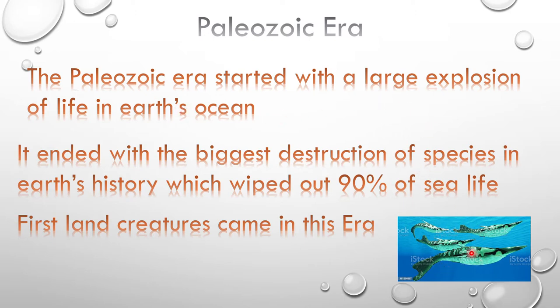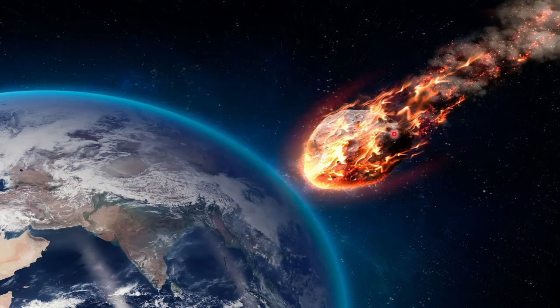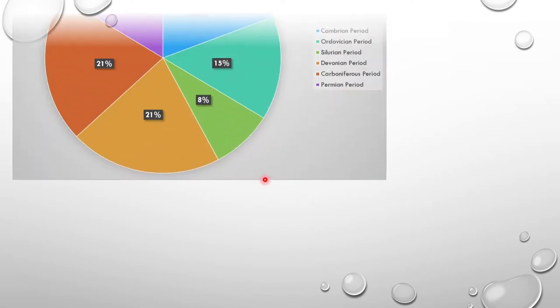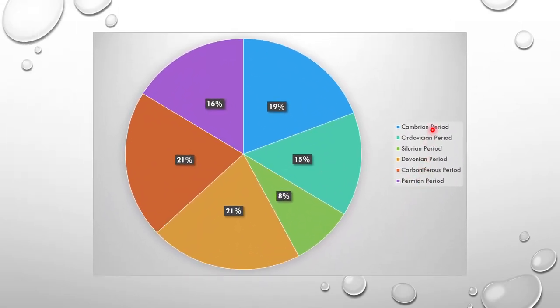Life started in the ocean, and there were jawless fishes, then a mass extinction hit and wiped out most of the life. The Paleozoic Era contained six periods: the Cambrian period, the Ordovician period, the Silurian period, the Devonian period, the Carboniferous period, and the Permian period. A chart shows how much time each period covered.